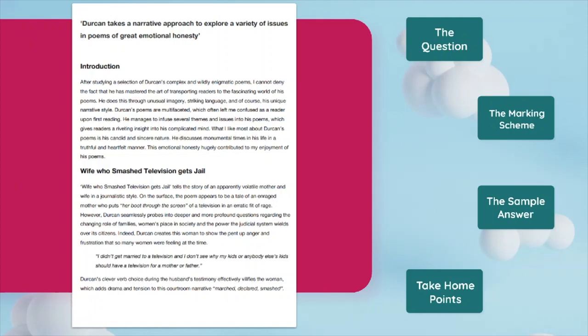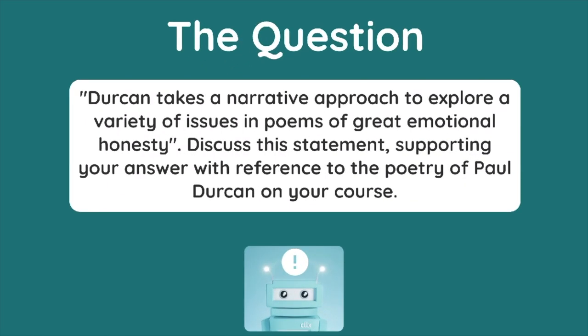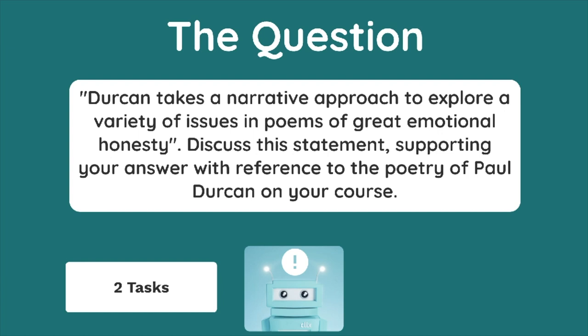Before we get into the sample answer itself, let's take a look at the question. The question reads: Durkin takes a narrative approach to explore a variety of issues in poems of great emotional honesty. Discuss this statement supporting your answer with reference to the poetry of Paul Durkin on your course. There are two tasks in this question: the first is to discuss how Durkin takes a narrative approach to explore a variety of issues, and the second is to discuss how Durkin's poetry is emotionally honest.